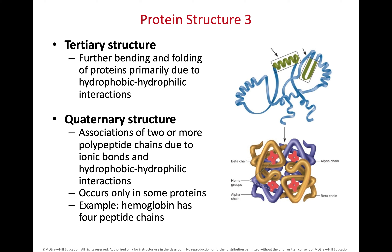Most proteins stop at the tertiary structure. Every once in a while, multiple chains of polypeptides — multiple tertiary structures — combine to form a quaternary structure. Quaternary structures are only going to occur in some proteins. The classic example is the hemoglobin molecule, made of four polypeptide chains — two alpha subunits and two beta subunits linked together.